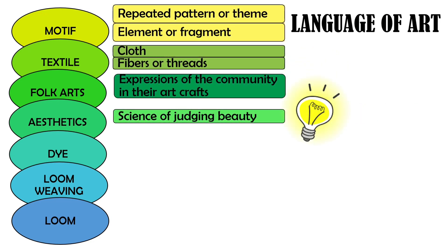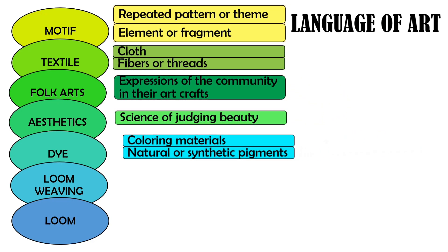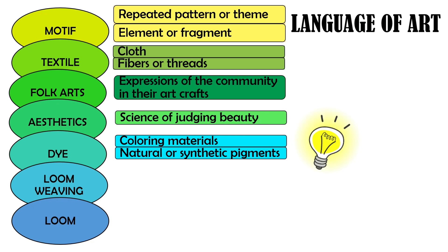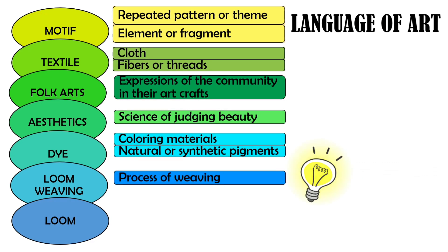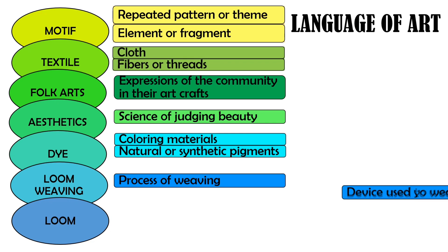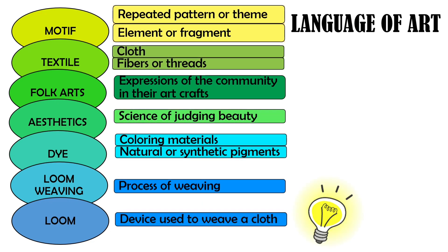Aesthetic is a science of judging beauty. Dyes are coloring materials that are made of natural or synthetic pigments for coloring fibers used in cloth weaving. Loom weaving is a process of weaving using a loom, a device used to weave a cloth.